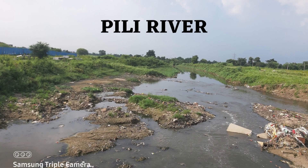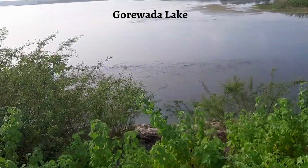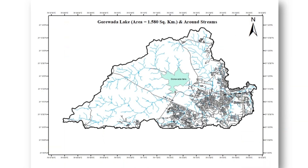Pili River from Lava Hills to Pavangaon. As can be seen in the map, Gowada Lake is continuously fed by many streams coming from Lava Hills. It can be assumed that Pili River originates from Lava Hills, then joins Gowada Lake and flows up to Pavangaon, the confluence of Pili River and Nag River. The map of Gowada Lake shows various streams coming from the Lava Hills side. The area of Gowada Lake is 1.580 square kilometers.